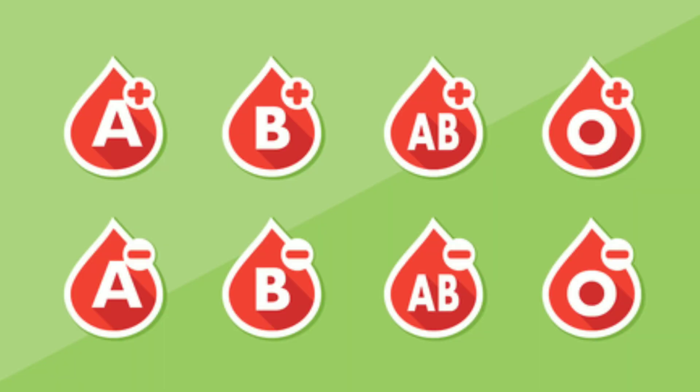So you have A positive, A negative, B positive, B negative, AB negative, AB positive, O positive, and O negative — eight different types of blood groups. So why is it important that you know your blood group? Antigens on the red blood cells determine your blood group, and red blood cells are very important. They are the ones that determine the blood group you belong to.